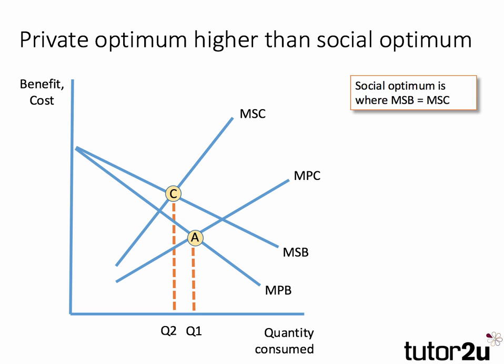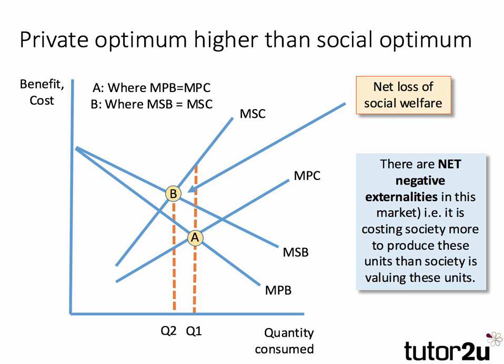In this final diagram, MSC is greater than MPC — social cost is greater than private cost — suggesting negative production externalities. But MSB is higher than MPB, suggesting positive externalities in consumption. The private optimum is where private cost and private benefit intersect at point A, giving output Q1. The social optimum is where social benefit meets social cost at point C, giving a lower output Q2. In this situation there's a net loss of social welfare — it's costing society more to produce these units than society values them. The external costs appear bigger than the external benefits, so overall we'd want output closer to Q2 than Q1.